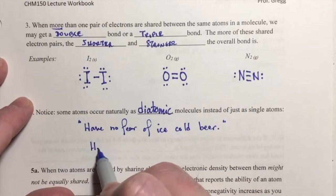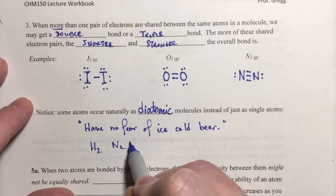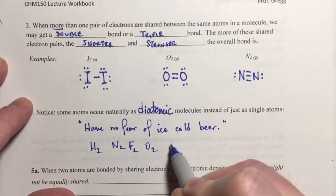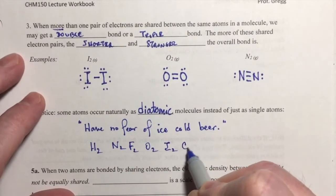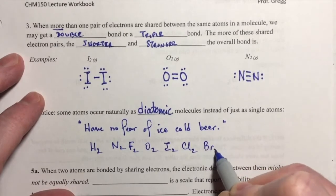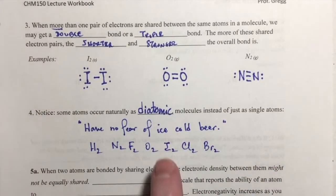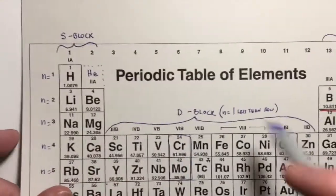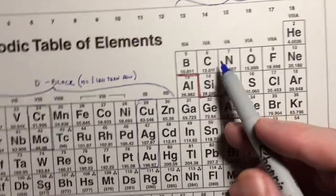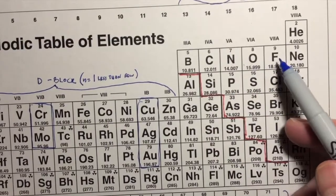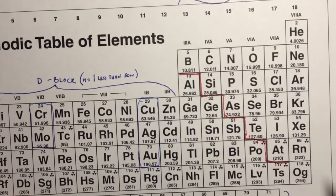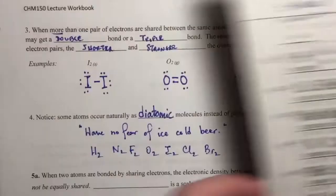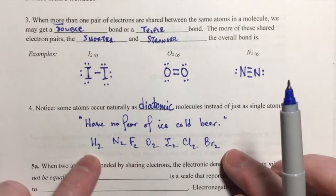So H2, N2, F2, O2, I2, Cl2, and Br2. But there's also an easy way to remember them just by looking at the periodic table. You have hydrogen and then these along the corner here from nitrogen, oxygen, fluorine, chlorine, bromine, iodine. They occur as diatomic species.